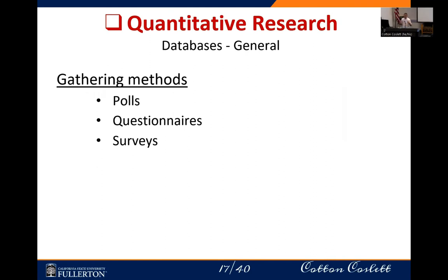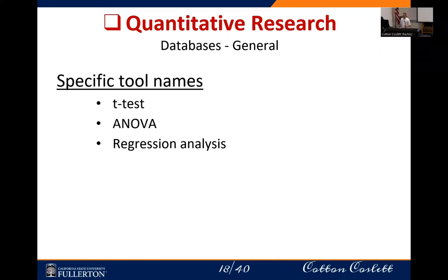Another thing to consider while keyword searching is how the research is gathered. As mentioned earlier, polls, questionnaires, and surveys can be an extremely helpful way to make sure you're getting that gathering method in your results. There are also specific tools used in quantitative analysis — terms such as t-test, ANOVA, and regression analysis can be quite useful. Regression analysis in particular is very specific but will bring back considerable amounts of results all using that specific type of analysis.